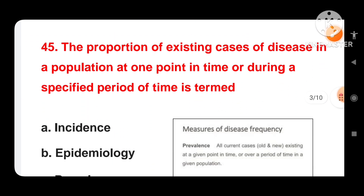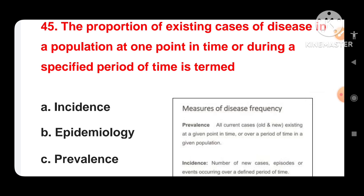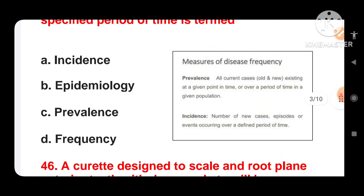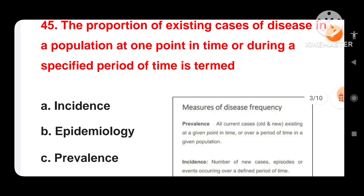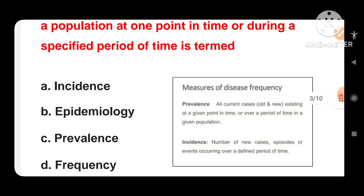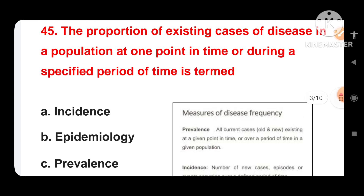Next question: the proportion of existing cases of disease in a population at one point in time or during a specified period of time is termed as — options are incidence, epidemiology, prevalence, or frequency. The correct answer is prevalence. All current cases — old and new — existing at a given point in time or over a period of time in a given population is called prevalence. In comparison, incidence refers to the number of new cases, episodes, or events occurring over a defined period of time. The correct answer here is prevalence.